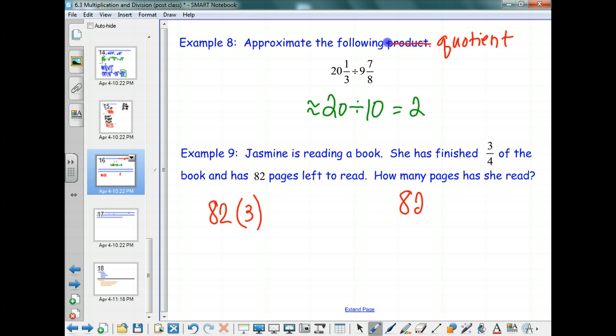So what you're reasoning is that 82 pages is one-fourth of the book. Right? So when I multiply 82 times 3, what am I finding? It is three-fourths, which is how much she's read. Correct? So if I take 82 times 3, this will give me the number of pages read. And what is 82 times 3? 246 pages.